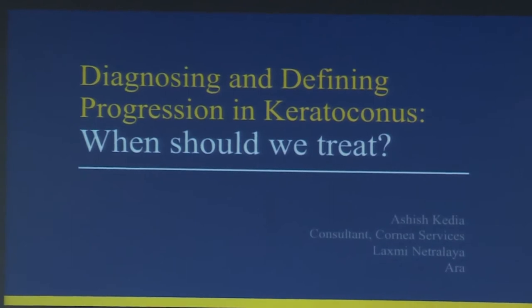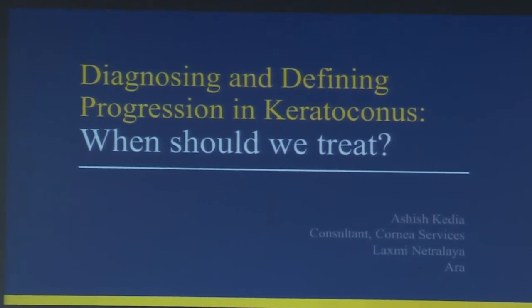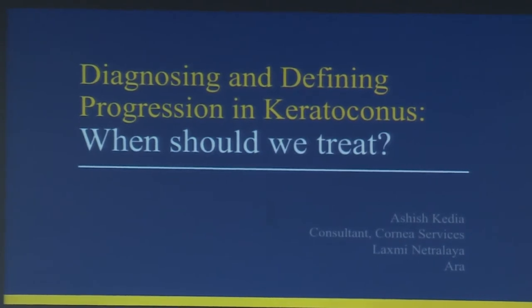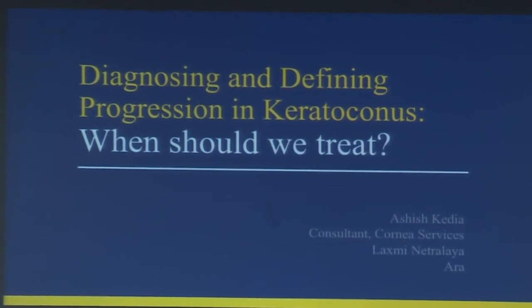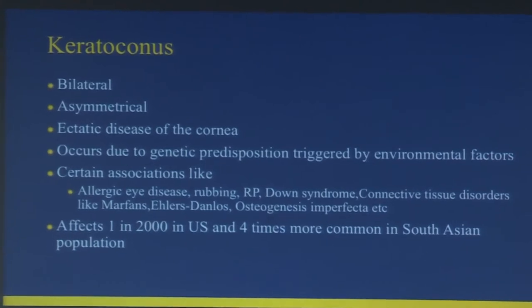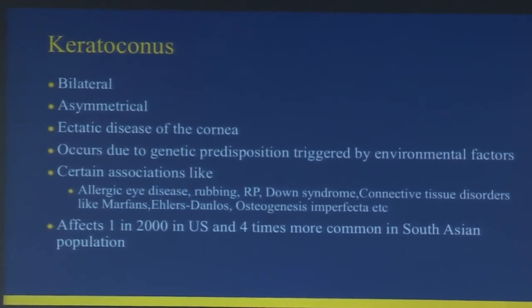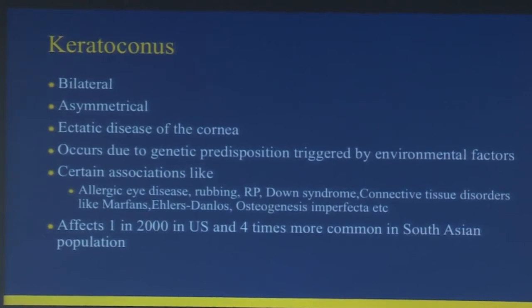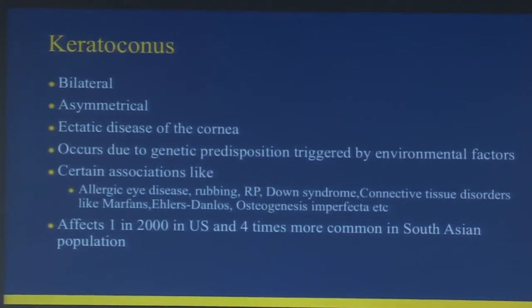In the next five to eight minutes, we'll go through the diagnostic criteria for keratoconus, the right time to treat, and how to document progression in these cases. Keratoconus is a bilateral asymmetrical ectatic disease of the cornea that occurs due to a genetic predisposition triggered by environmental factors.